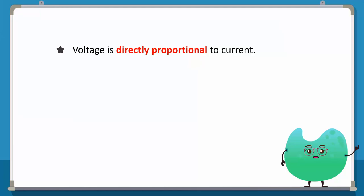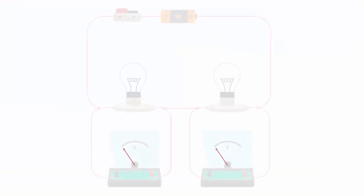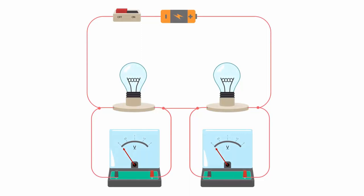Let's do another experiment. Consider a circuit with two bulbs. Bulb A has a resistance of 100 ohms and bulb B has a resistance of 200 ohms. Switch on the circuit.